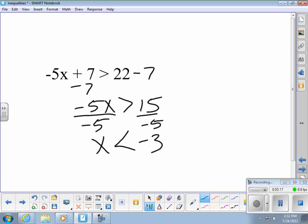Well, negative 4 is less than negative 3. Let's try that in the original equation just to check and see if it's correct. Negative 5 times negative 4, plus 7. Negative 5 times negative 4 is 20, plus 7 is 27. Is that greater than 22? Yes.